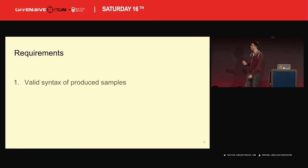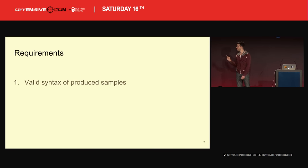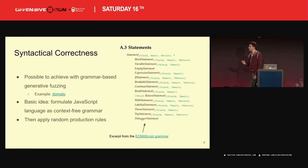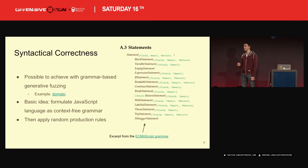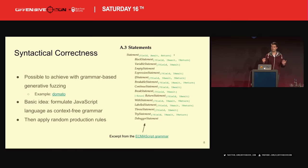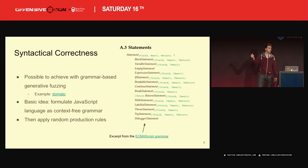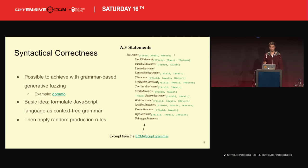This brings us to our first requirement: all the samples we generate have to at least have valid JavaScript syntax. Now, how can we achieve syntactical correctness? One possible way is with a grammar-based fuzzer — that's also a very common approach. An example is Domato and many others. The idea is you take the JavaScript syntax, formulate it as a context-free grammar, and then your fuzzer takes random production rules — it decides to produce an expression statement, then for the expression it decides to use an addition expression, and so on.